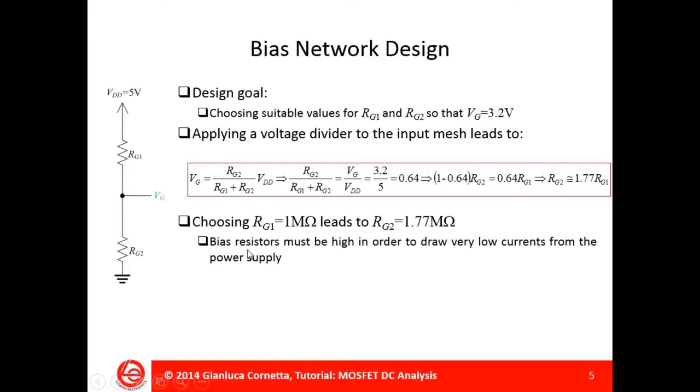I want to choose bias resistors very high in order to draw very low currents from the power supply.